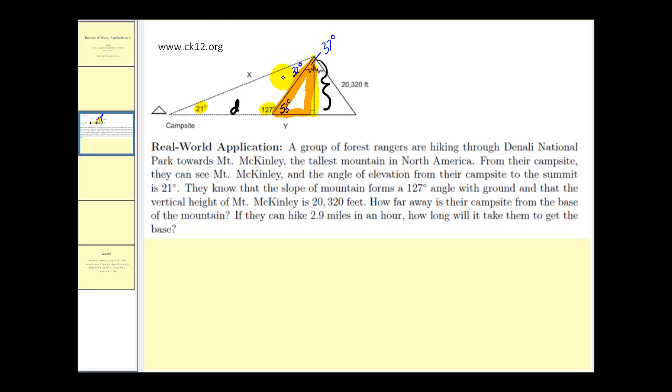So we'll call this H. So we'll have the sine of 53 degrees must equal the opposite side or 20,320 divided by the hypotenuse or H. Let's make this into a proportion. Now we'll cross multiply. H times the sine of 53 degrees must equal 20,320. We'll divide by the sine of 53 degrees. This will give us H is approximately equal to this quotient.